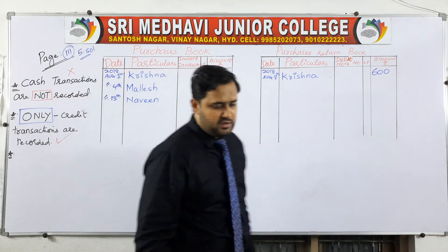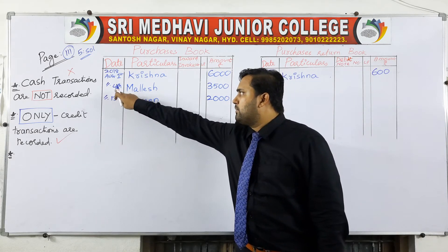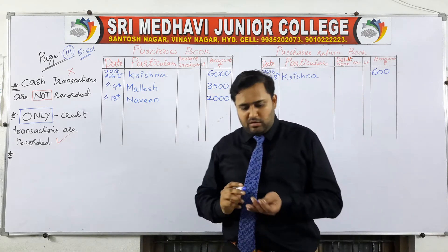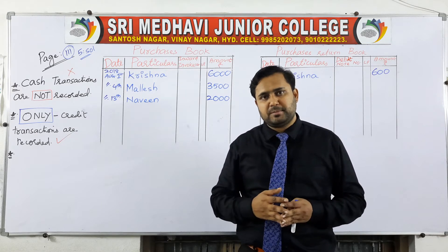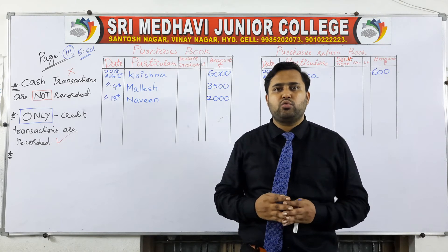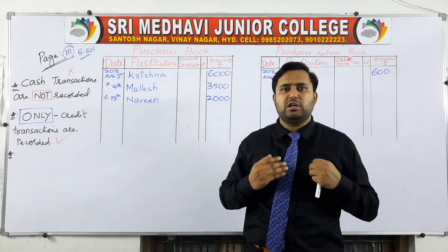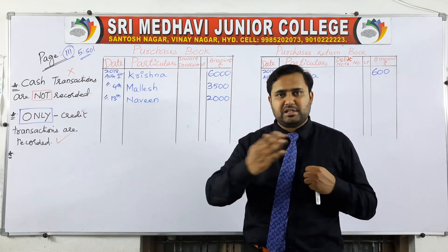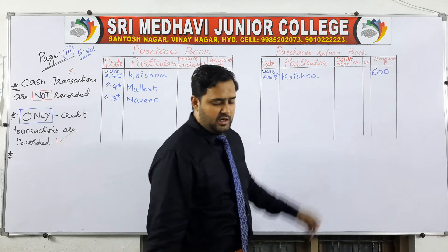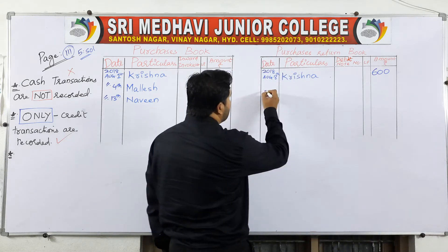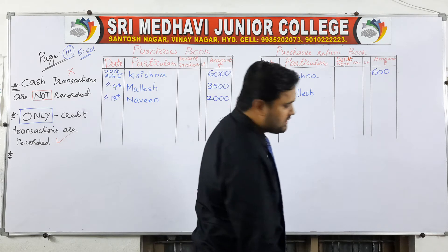On 16th August 2018, goods were returned to Mallesh. You had bought goods from Mallesh on 4th August for 3,500 rupees, and some of those goods were found damaged, defective, or unusable. Since you already purchased and are now returning, this is a purchase return, recorded in the purchase returns book. Date: 16th August, party name: Mallesh.